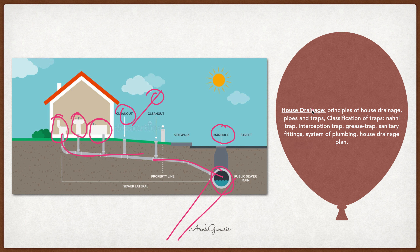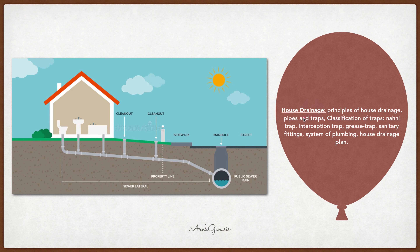House drainage means the principles of house drainage — pipes and traps. We will discuss what traps are, classification of traps, sanitary traps, interception traps, grease traps, sanitary fittings, and all the plumbing of the house drainage system. This entire system overall is called the house drainage system.